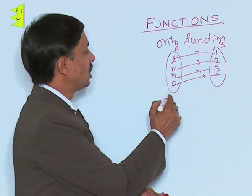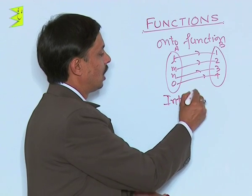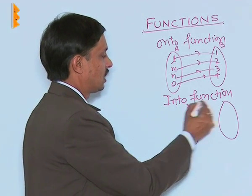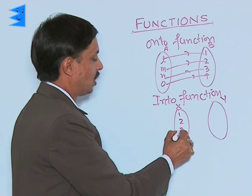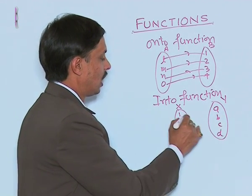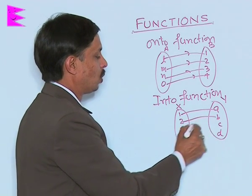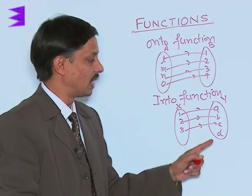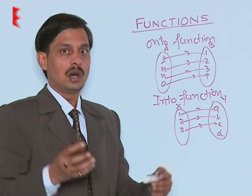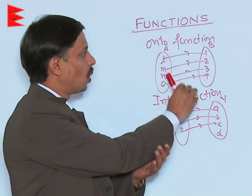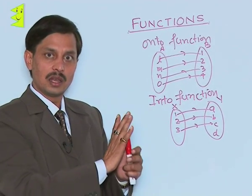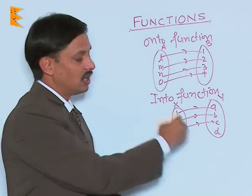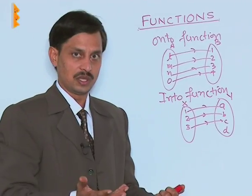In case any seat is left, we say it is an into function. For example, set X has elements 1, 2, 3 and set Y has seats A, B, C, D. If 1 is associated to A, 2 to B, and 3 to C, then D is left. If D is left unimaged, it means it is an into function. The big difference is: if none of the elements of the second set remain unimaged, it is onto. If even one element is left unimaged, it is an into function.